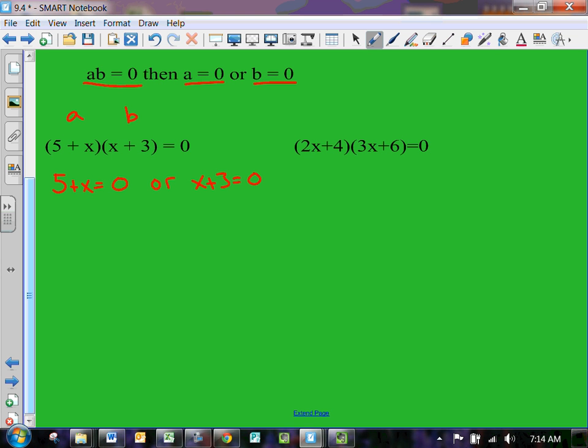This is that if A times B equals zero, then A or B has to be zero. We're just going to solve these. Subtract five from both sides, so x equals negative five. Or subtract three from this one on both sides, so x equals negative three. If you imagine this graph, it's going to be at negative five and at negative three, so that's the root of the solution.